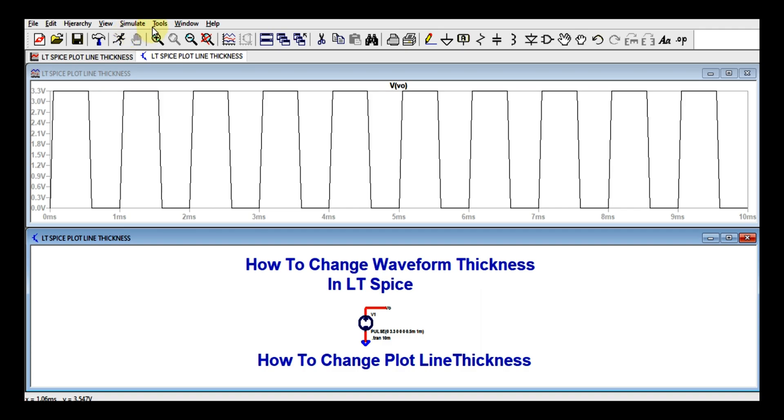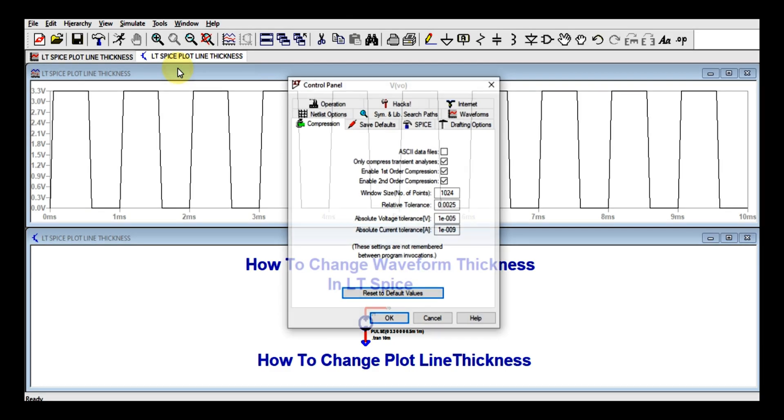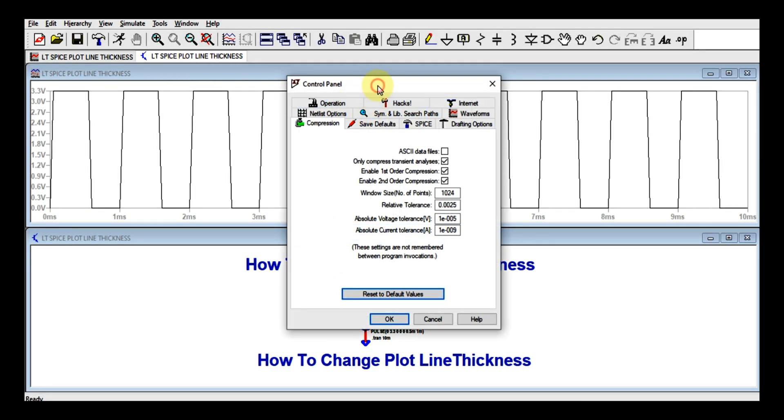So how will you change the thickness of this waveform? This is the agenda of today's video. Just go to the Tools button, then click on Tools, go to Control Panel.